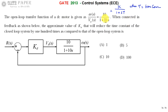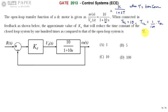When comparing equations, the coefficient of s in the denominator is treated as τ. So in this case, τ_open_loop is equal to 10. We need to choose Ka such that the closed-loop time constant is 100 times lesser than the open-loop time constant, that is τ_open_loop divided by 100. So τ_closed_loop equals 10 divided by 100, which is 1/10.